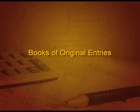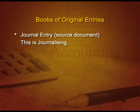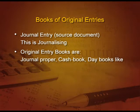Welcome students. We are now going to start with the second part of Chapter 3, that is Books of Original Entries. The first journal entry is done through a source document, and this process is called journalizing. The original entry books include the journal proper, in which we record those transactions which are not very specific.